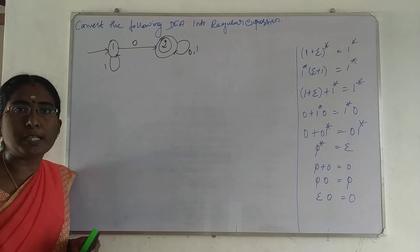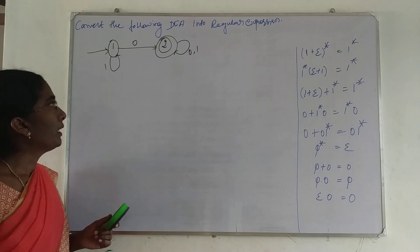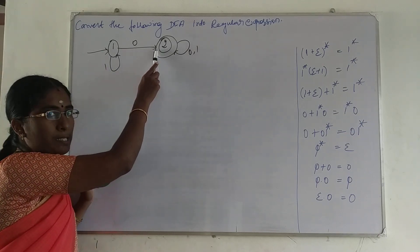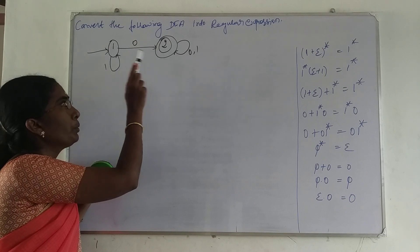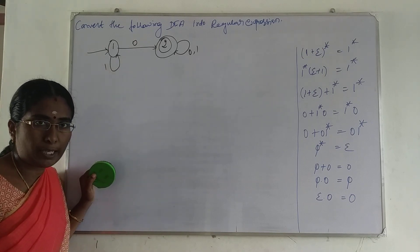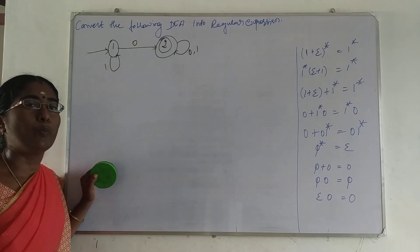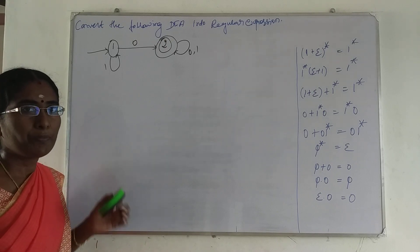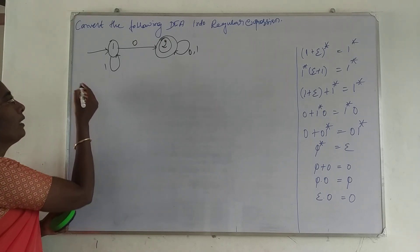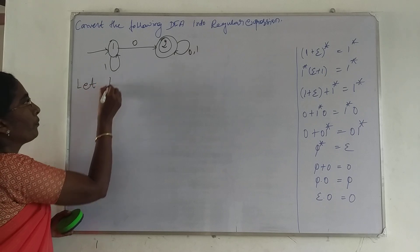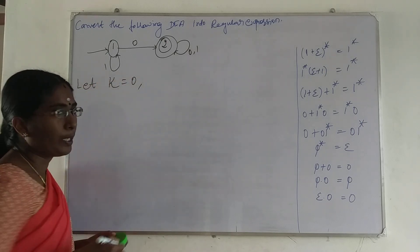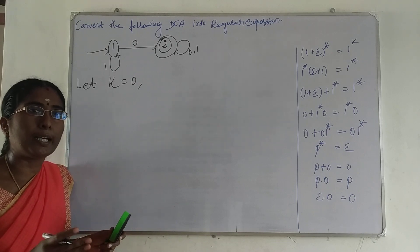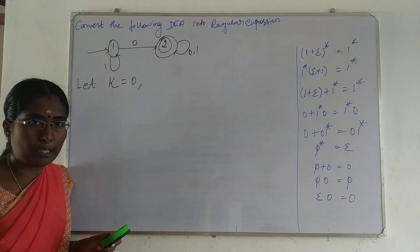With one intermediate state, the meaning is: from state 1 to state 1 through an intermediate state — what is the regular expression for that? So first, let K=0: without an intermediate state, what are the four transitions and their corresponding regular expressions?